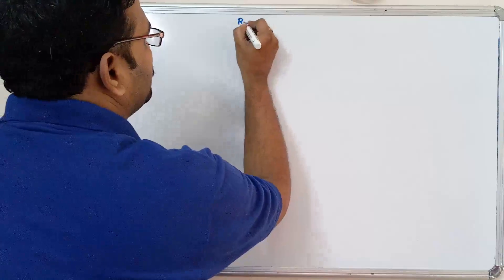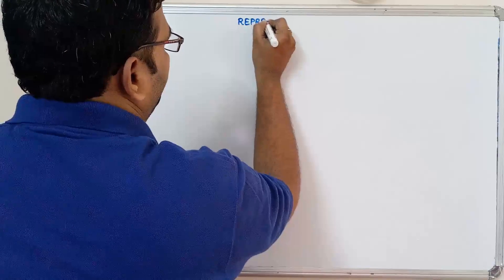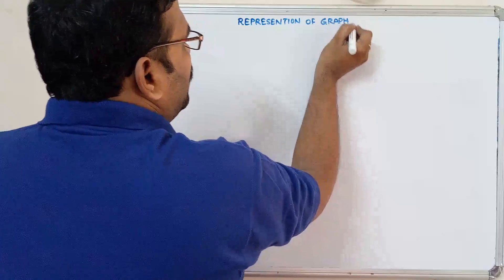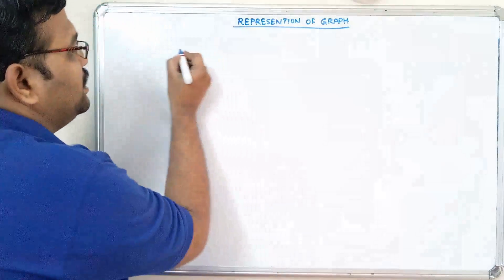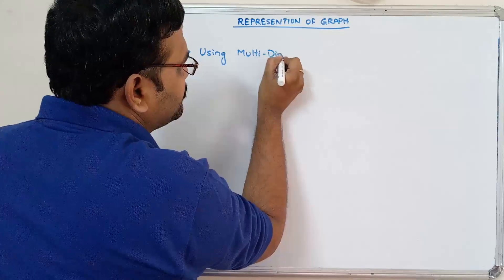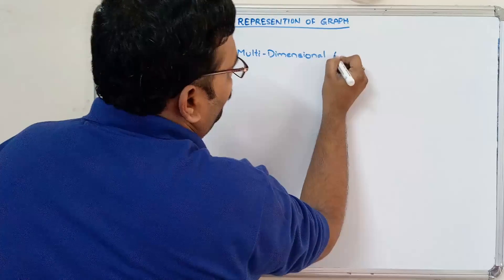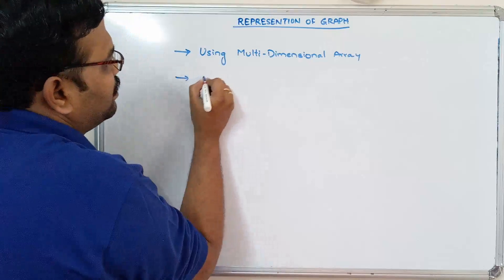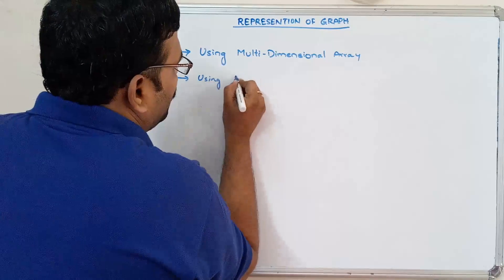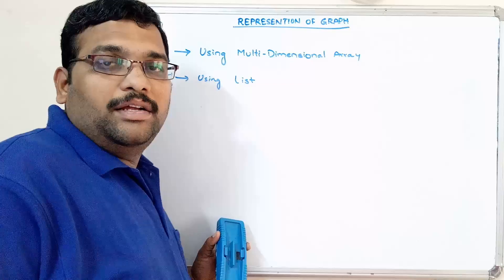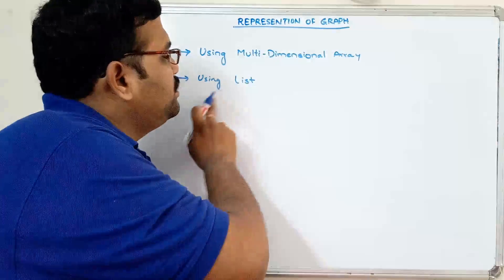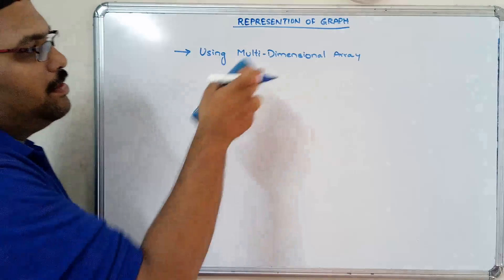So, representation of graphs. A graph can be represented in two ways: first one is using a multidimensional array, and the other one using the list concept. We'll see how a graph can be represented by using a multidimensional array and how it can be represented by using the list. First we'll go with the multidimensional array.